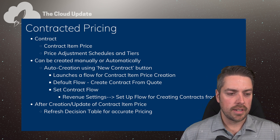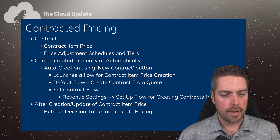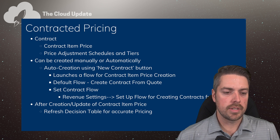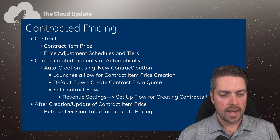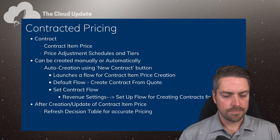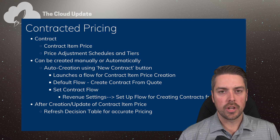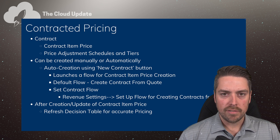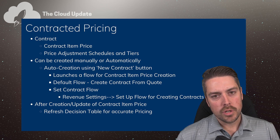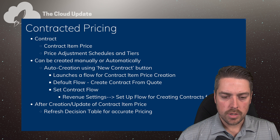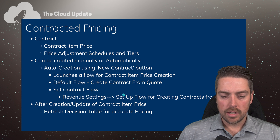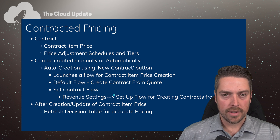Contracted pricing can be created either manually or automatically. Manually, we're going to go through creating a contract, creating your contract item price records, and adjustment schedules and tiers as necessary. Auto creation can happen using the New Contract button on the quote object which launches a flow. You've got a template in your Revenue Cloud environment by default that you can customize, and the contract flow needs to be set under revenue settings for creating contracts from quotes.